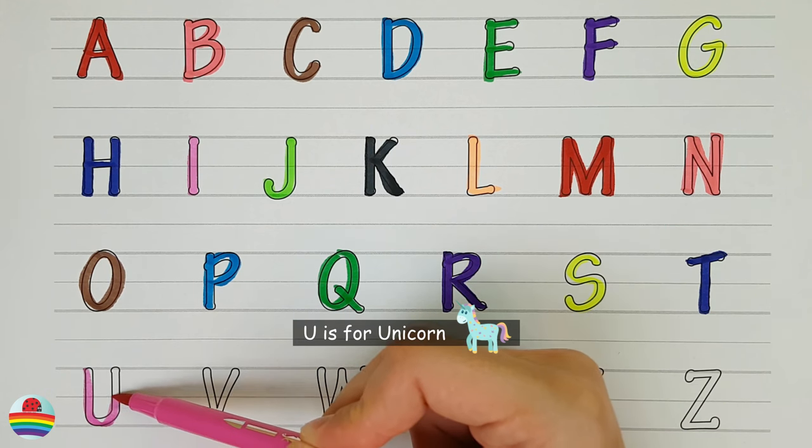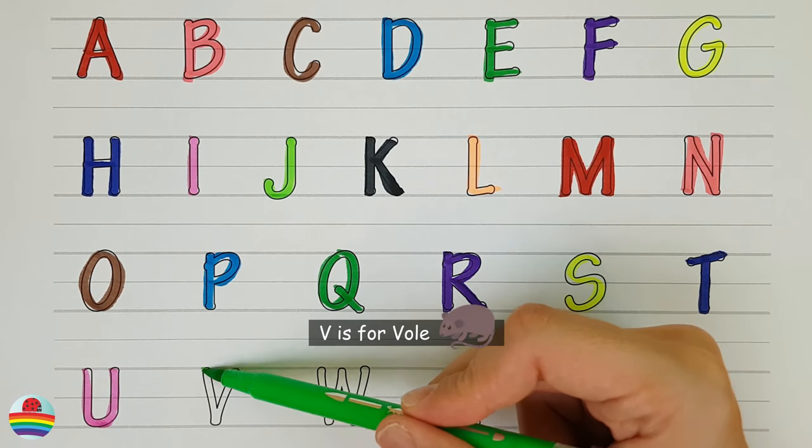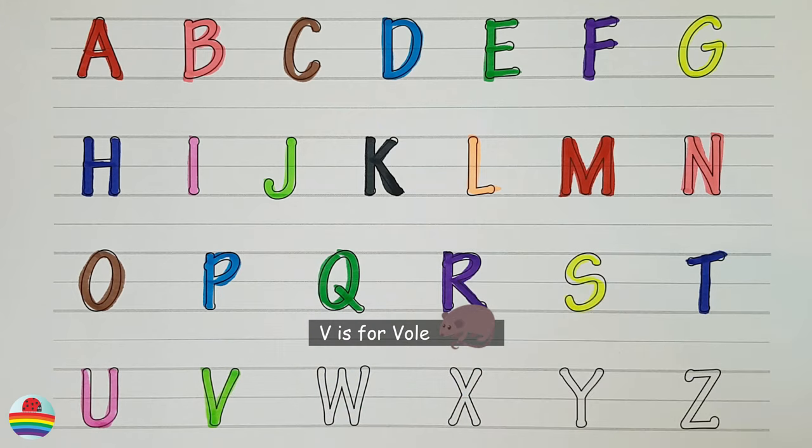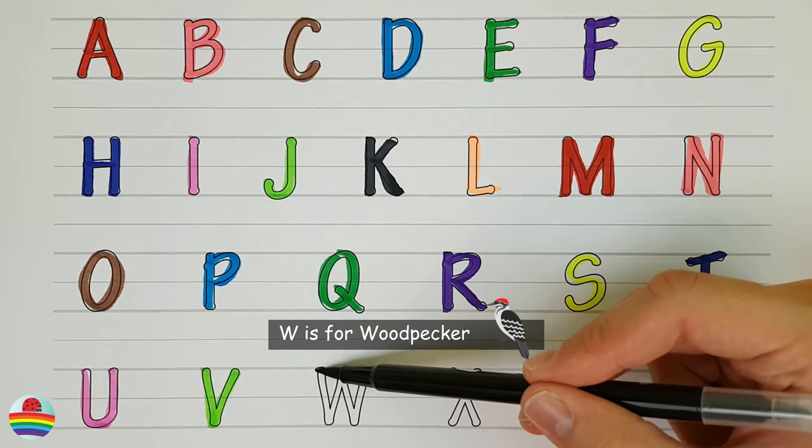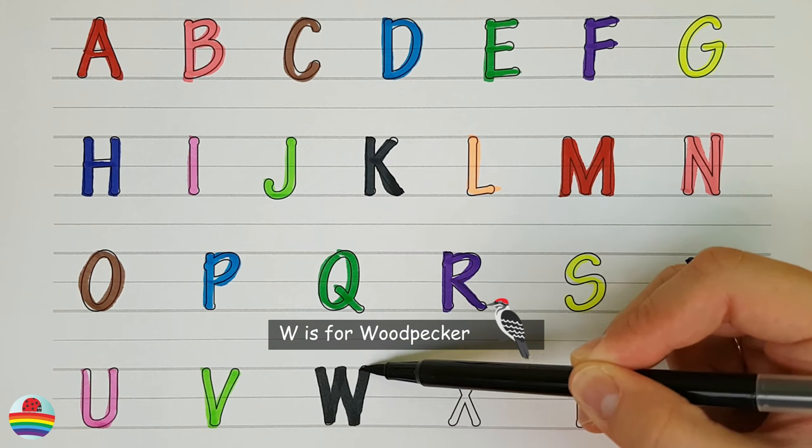for unicorn. U. V. V is for vulture. V. W. W. W is for woodpecker. W.